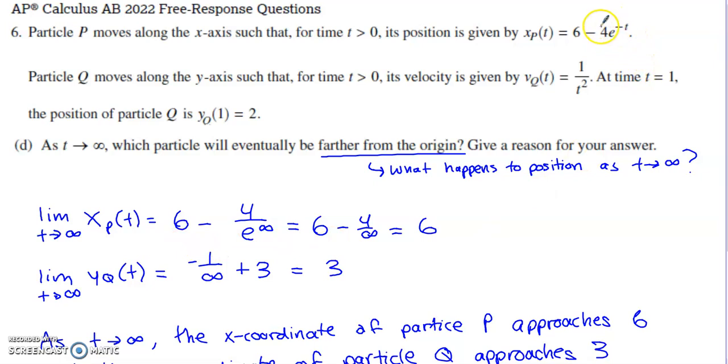You end up with 6 minus 4 over infinity. That's really going to trend to 0 as the denominator grows and grows. 6 minus 0 is, of course, 6.